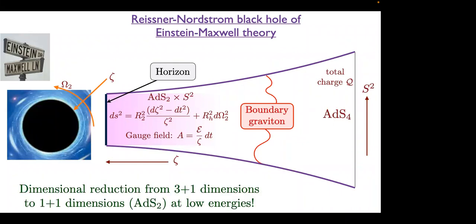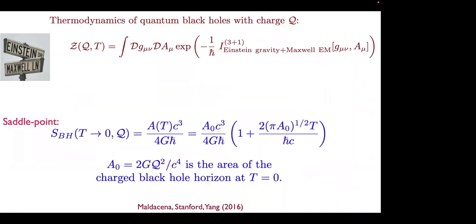To compute the fluctuations, we compute them only in the theory where all fields depend only on the radial direction and time. We do a dimensional reduction, starting with the theory in three-plus-one dimensions, keeping all the fields and metric components, saying every component depends only on the radial direction and time. When you do that, you get a theory of fields in one space and one time dimension.